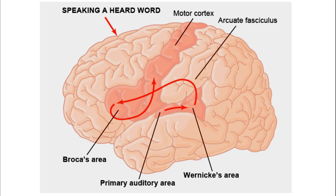Speaking a heard word: when we hear words via the auditory pathway, this information reaches the primary auditory cortex. From there it goes to the Wernicke's area where interpretation and comprehension occur. From there it goes to Broca's area, the site for word formation. From Broca's area it goes to the motor cortex, which transfers signals to the different muscles of speech and speech is produced. The information runs from Wernicke's area to Broca's area via the arcuate fasciculus.